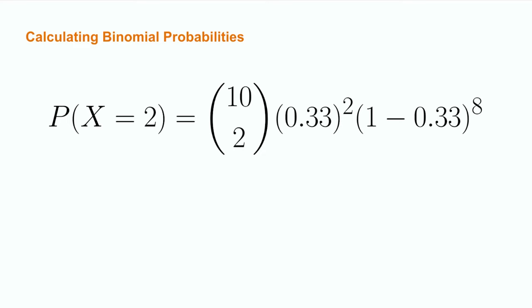Intuitively, we can break this equation down into three parts. First, the 10 choose 2 gives us the number of possible ways that we can arrange two successes and eight failures across the 10 trials. This will be a very large number for most experiments. Second, the 0.33 raised to the 2 represents multiplying the probability of success times the number of successes we are looking for. This will always be a number much smaller than one but greater than zero.